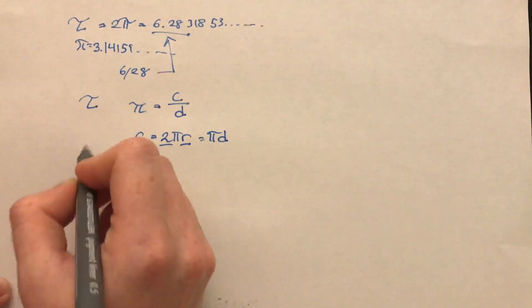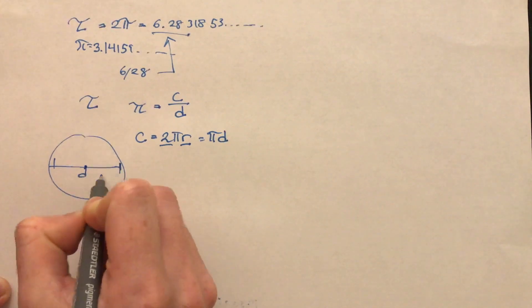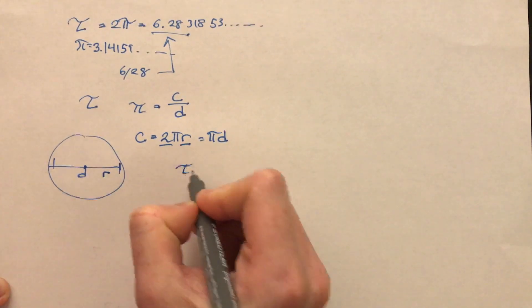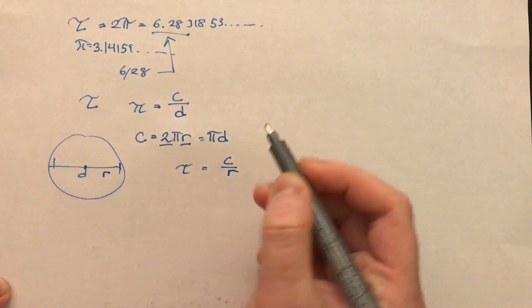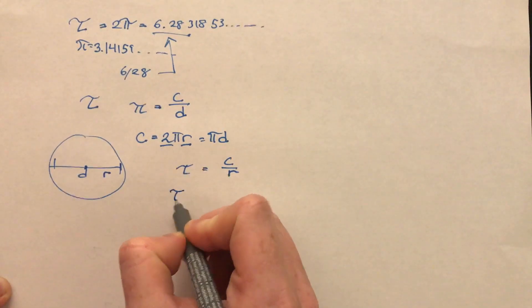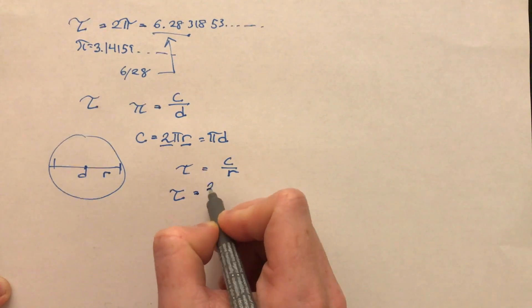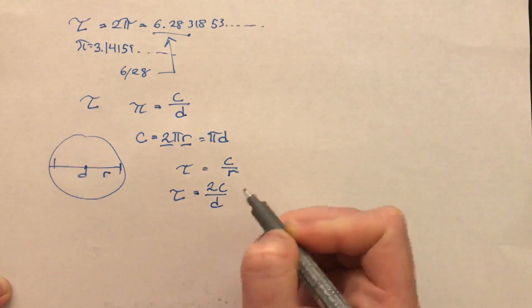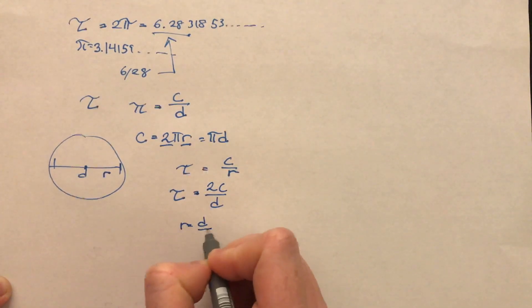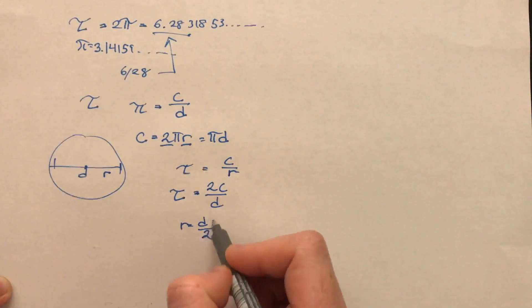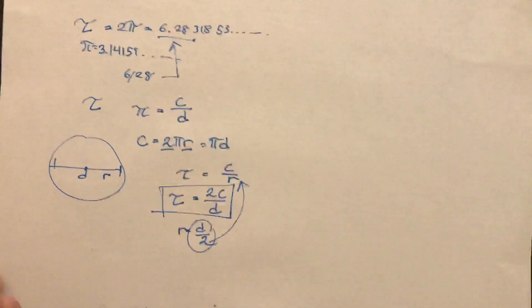However, if we want to look at a circle, and instead of looking at its diameter, we want to look at one half, which is the radius, we can utilize tau. Tau is just the circumference divided by the radius. This new circle constant can just be solved in terms of d, just by finding 2c over d, because we know that radius is equal to d over 2. And if we substitute here, we just get 2 times the circumference divided by d.